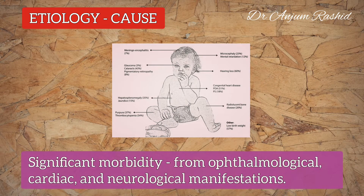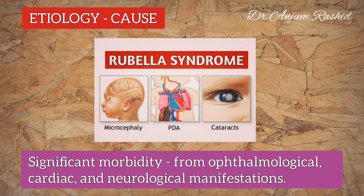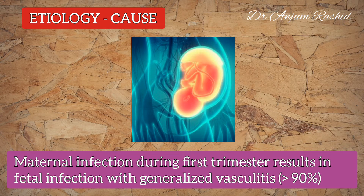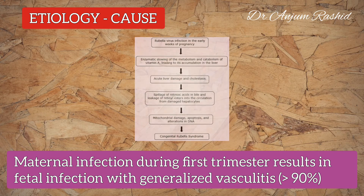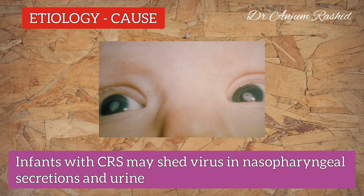Infection in utero results in congenital rubella syndrome. In this case, the baby usually has significant morbidity from ophthalmological, cardiac, and neurological manifestations. Maternal infection during the first trimester of pregnancy results in fetal infection with generalized vasculitis, and this occurs in more than 90 percent of cases.